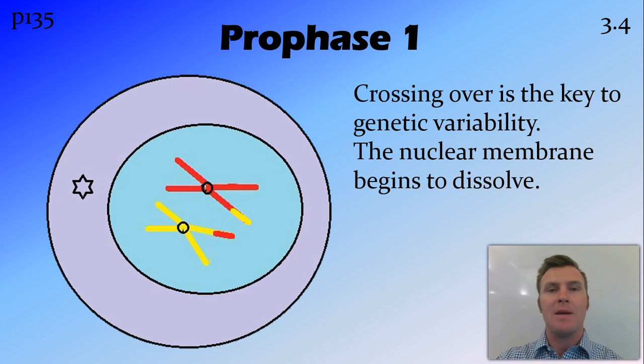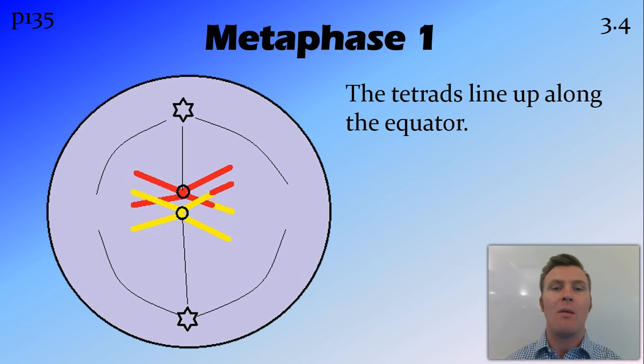So that by the time we get into metaphase 1, the nuclear membrane has been dissolved. Now, the tetrads—a tetrad is 4 of these chromosomes, which now are no longer identical. So these are 4 homologous chromosomes, and they clump together in a tetrad.